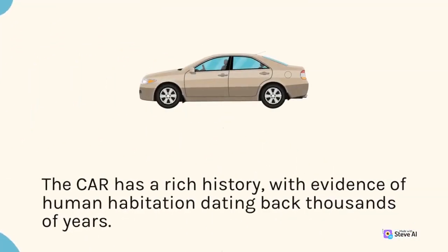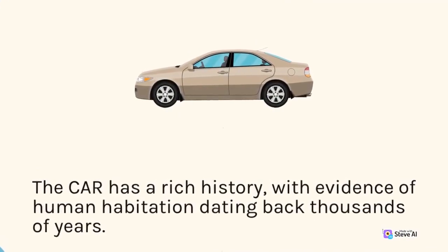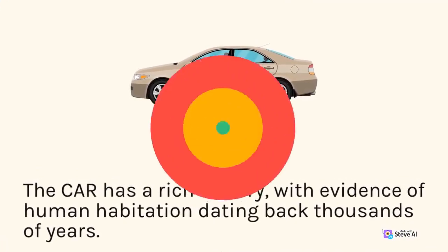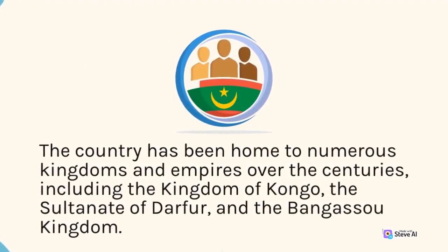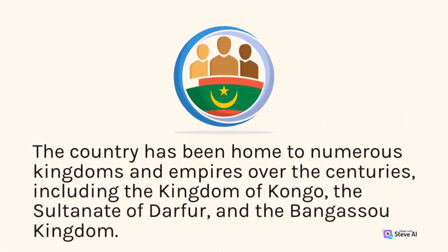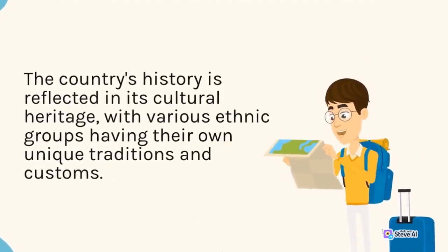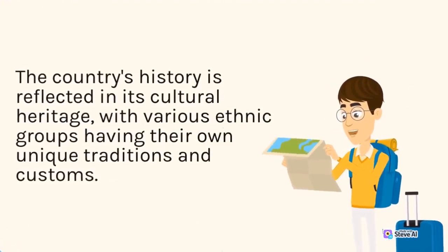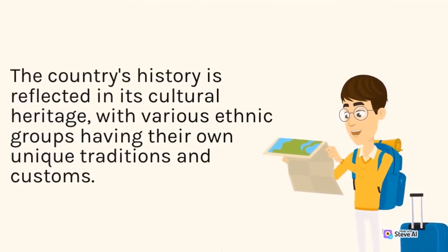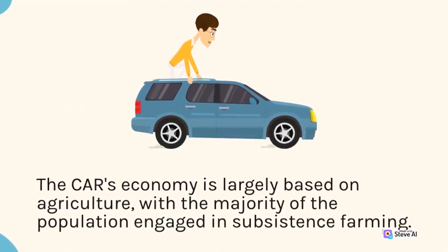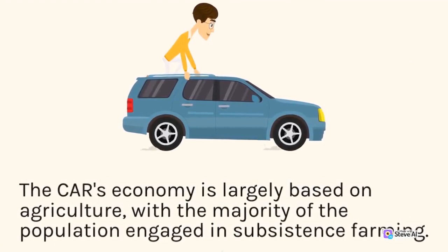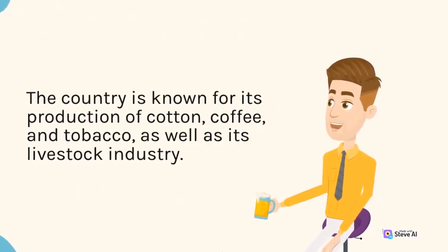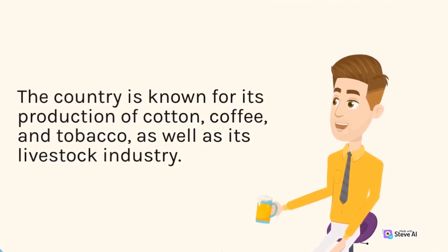The CAR has a rich history, with evidence of human habitation dating back thousands of years. The country has been home to numerous kingdoms and empires over the centuries, including the Kingdom of Congo, the Sultanate of Darfur, and the Bangassou Kingdom. The CAR's economy is largely based on agriculture, with the majority of the population engaged in subsistence farming. The country is known for its production of cotton, coffee, and tobacco, as well as its livestock industry.